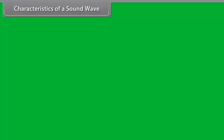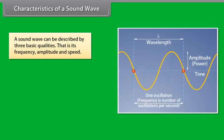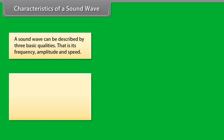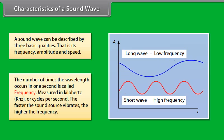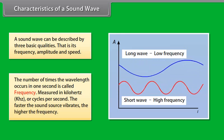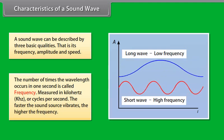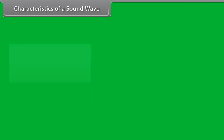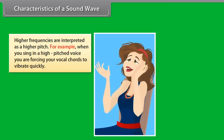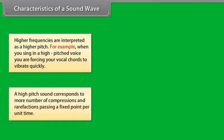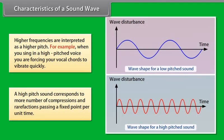Characteristics of a sound wave. A sound wave can be described by three basic qualities: its frequency, amplitude and speed. The number of times the wavelength occurs in one second is called frequency. It is measured in kilohertz or cycles per second. The faster the sound source vibrates, the higher the frequency. Higher frequencies are interpreted as a higher pitch. For example, when you sing in a high-pitched voice, you are forcing your vocal cords to vibrate quickly. Thus, a high-pitched sound corresponds to more number of compressions and rarefactions passing a fixed point per unit time.